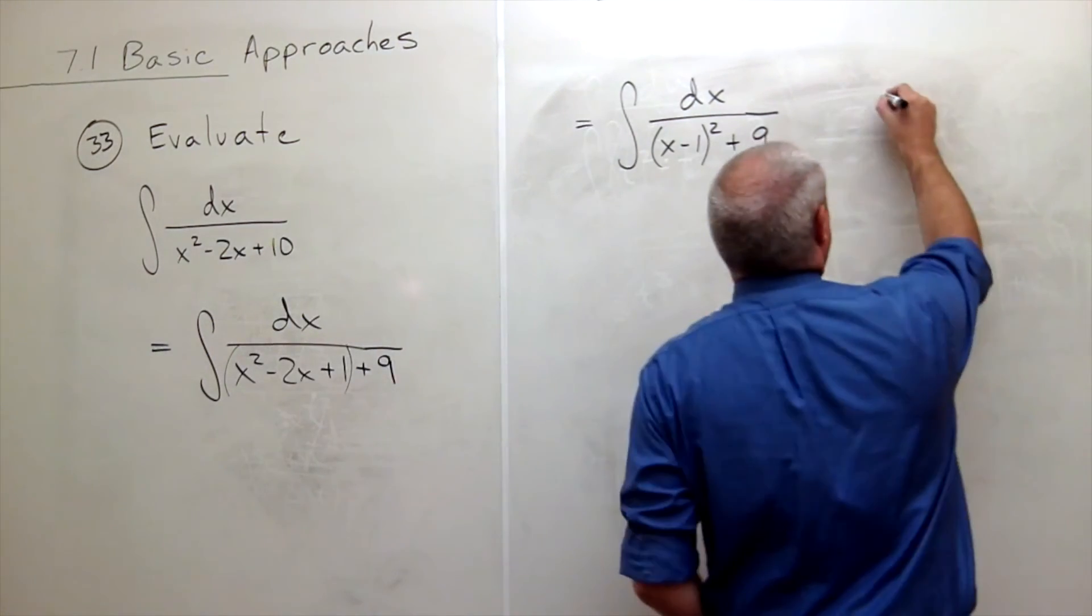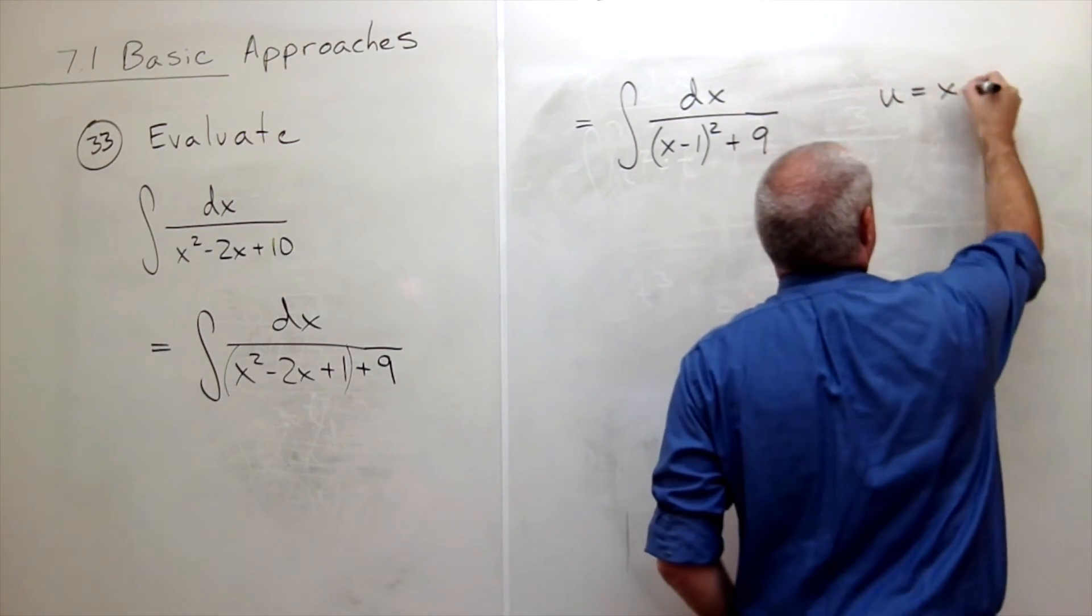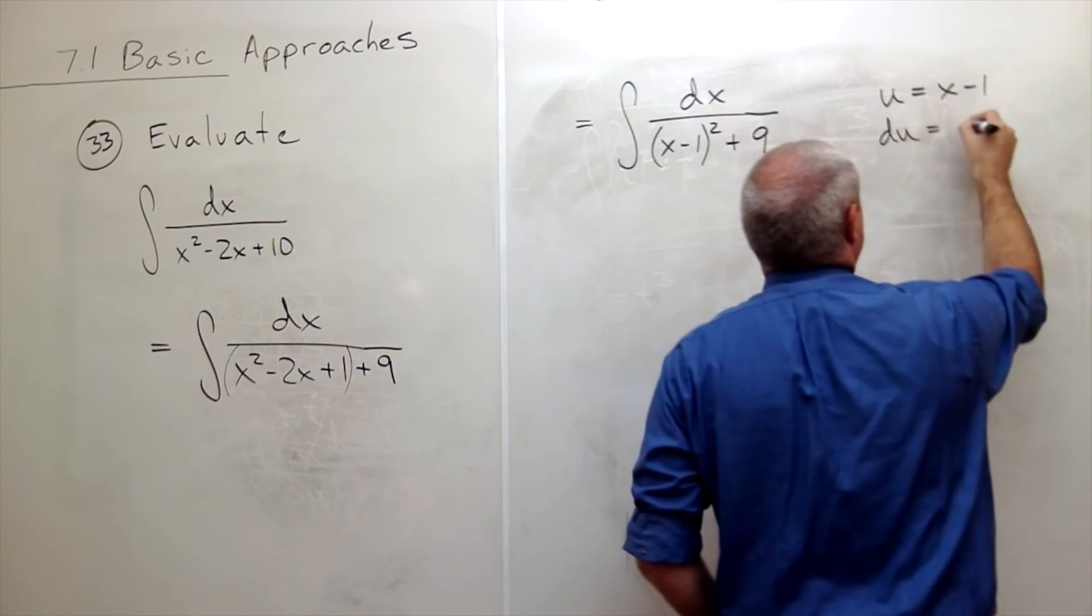So let's make that u substitution. I'll say u is x minus 1, so du is dx.